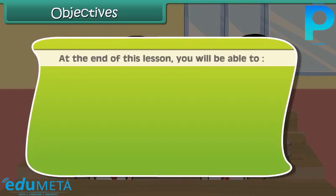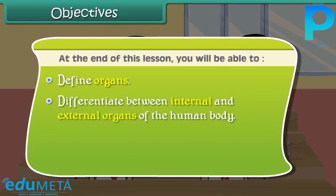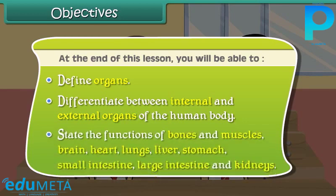Objectives: At the end of this lesson, you will be able to define organs, differentiate between internal and external organs of the human body, and state the functions of bones and muscles, brain, heart, lungs, liver, stomach, small intestine, large intestine, and kidneys.